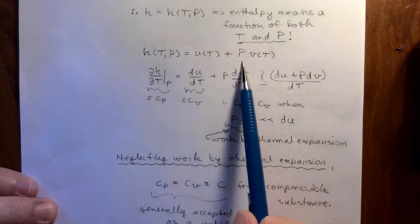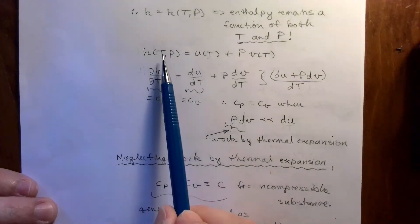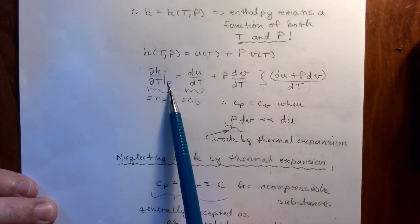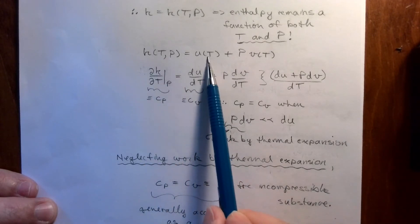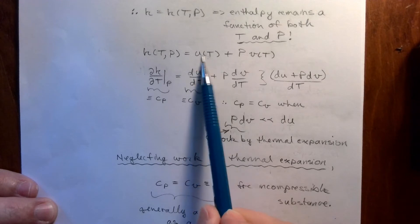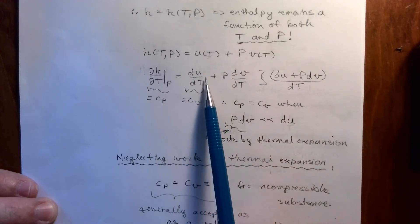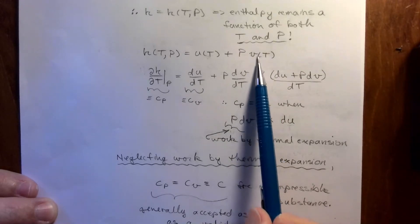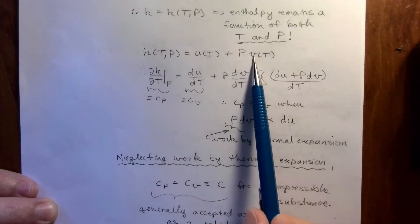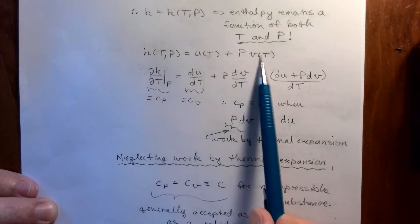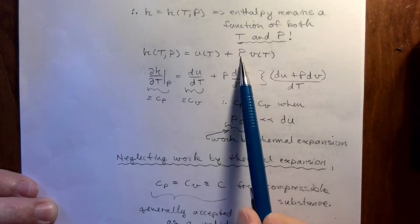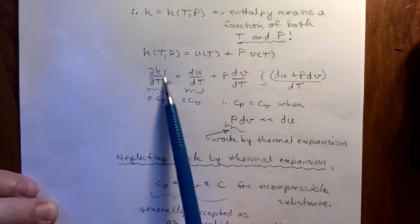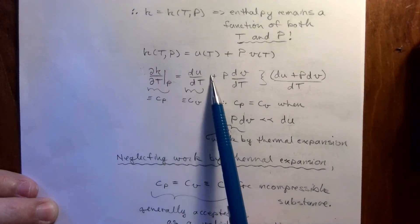Taking the partial of H with respect to T while holding P constant: the partial of H with respect to T at constant P equals the partial of U with respect to T — since U doesn't depend on P, no partial is needed, that's the same as dU/dT — plus P times dV/dT, since P is constant it comes out front. So we're left with this equation after taking the derivative. This is by definition C sub P, and the other term involves C sub V.